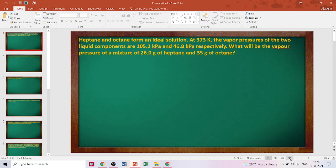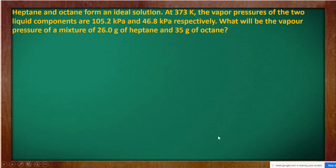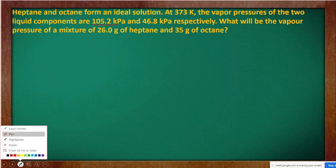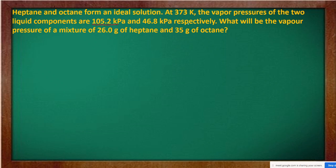Let's begin today. The question selected is: heptane and octane form an ideal solution. At 373 Kelvin, the vapor pressure of the two liquid components are 105.2 kilopascals and 46.8 kilopascals respectively. We have to find the vapor pressure of a mixture of 26 grams of heptane and 35 grams of octane. This is an application of Raoult's law.